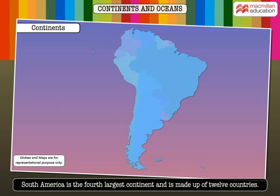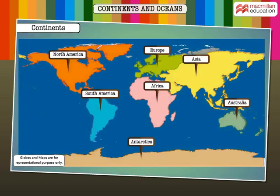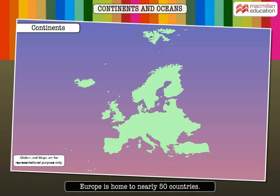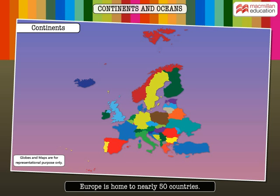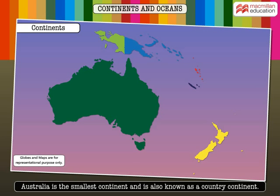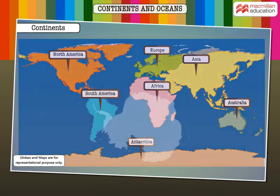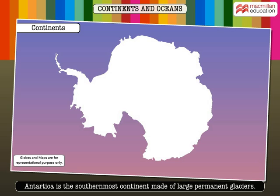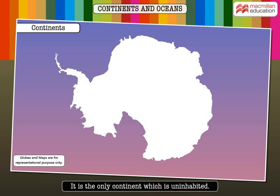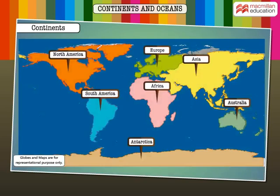South America is the fourth largest continent and is made up of 12 countries. Europe is the second smallest and the third most populated continent, home to nearly 50 countries. Australia is the smallest continent and is also known as a country-continent. Antarctica is the southernmost continent, made of large permanent glaciers, and is the only continent which is uninhabited.